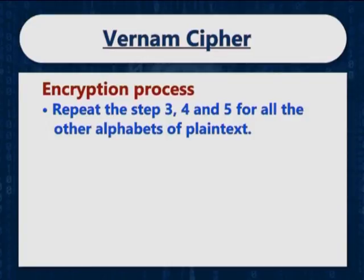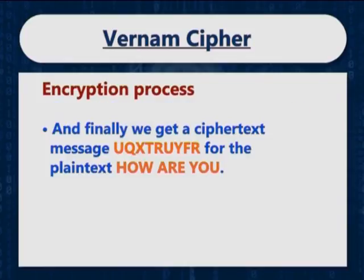Repeating steps 3, 4 and 5 for all the other alphabets of plain text, we finally get a cipher text message U, Q, X, T, R, U, Y, F, R for the plain text 'How are you'.